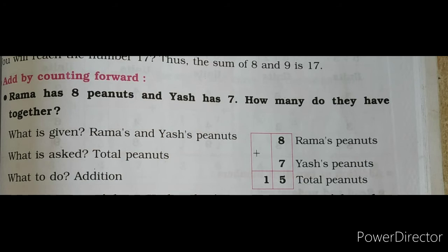Rama has 8 peanuts and Yash has 7. How many do they have together? Children, what is given? Rama and Yash's peanuts. What is asked? Total peanuts. So what to do? Addition. So children, in the empty column, you have to write 8 plus 7.